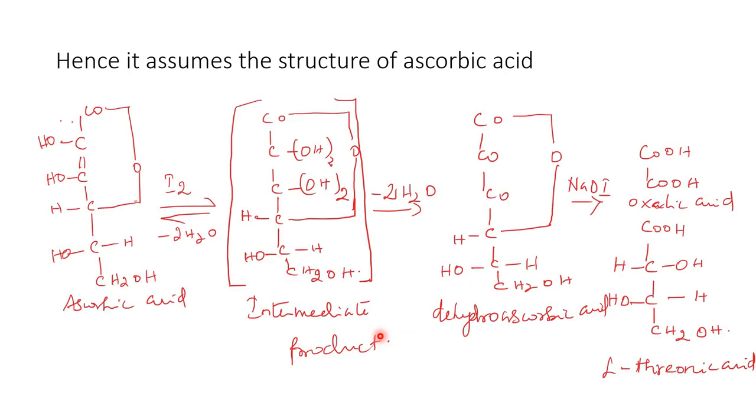Hence, it assumes the structure of ascorbic acid like this. This is ascorbic acid. It forms an intermediate product while treatment with iodine. This on removal of two molecules of water yields dehydroascorbic acid. This on sodium hypoiodite forms one molecule of oxalic acid and one molecule of L-threonic acid.